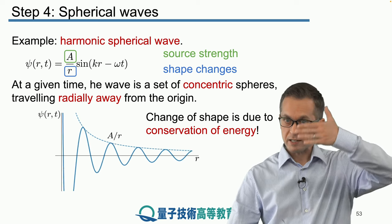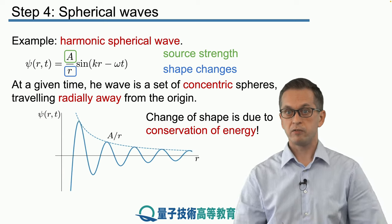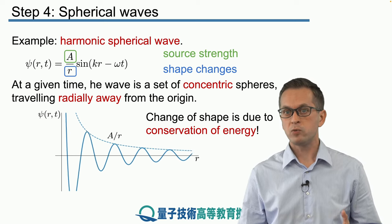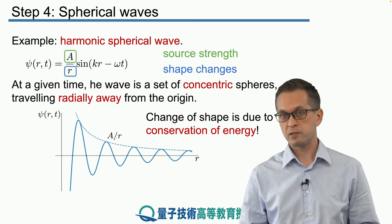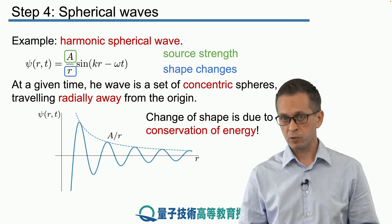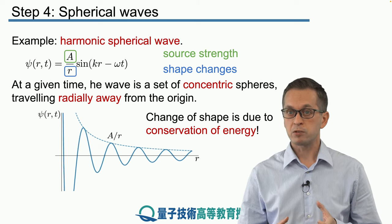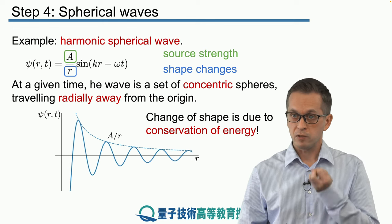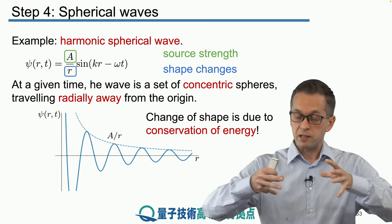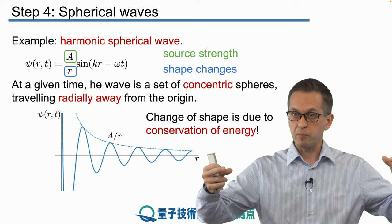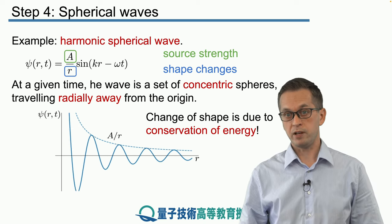Physically, why do we get this rescaling by 1/r? It arises mathematically from the wave equation and spherical symmetry, but physically it is because of conservation of energy. The wave is created with some finite energy at the source, but as the wave spreads outward it increases in size, so its amplitude must reduce to compensate for the spreading and to preserve total energy.